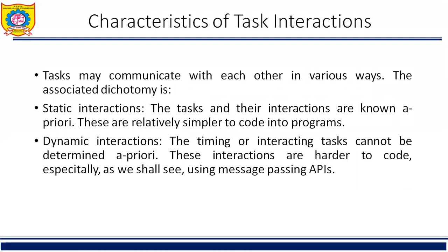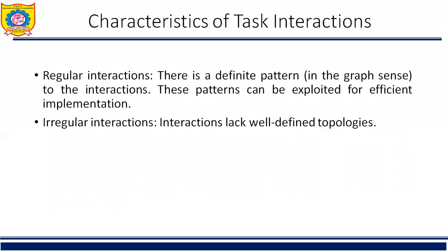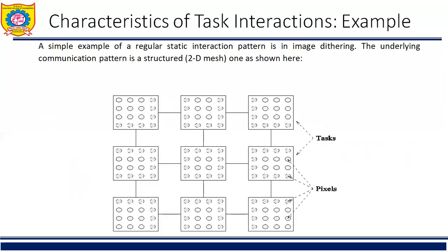Characteristics of task interaction: Tasks may communicate with each other in various ways. Static interaction — the tasks and their interactions are known prior to execution and are relatively simpler to code into a program. Dynamic interaction — the timing or the interacting tasks cannot be determined prior to execution and are harder to code, especially using message passing APIs. Regular interaction — there are definite patterns in the interaction graph that can be exploited for efficient implementation. Irregular interaction — the interaction lacks a well-defined topology.